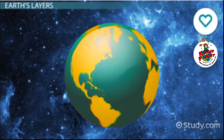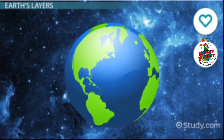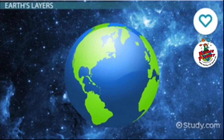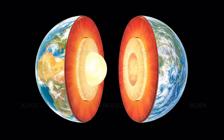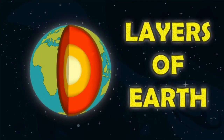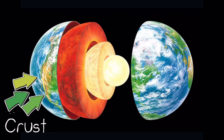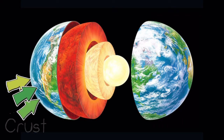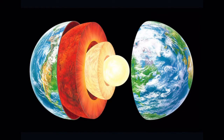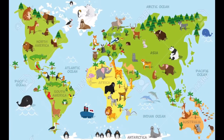Billions of years ago when the earth was made, it was very hot. Over time, the outside layer cooled and formed the crust. The crust is the thin outer layer of the earth where we live. This is where we see different landforms and water forms. Our continents and oceans are all on the crust of planet earth.